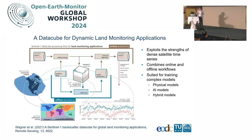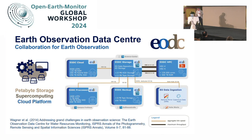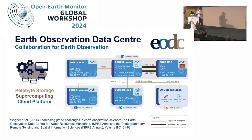We have built a global monitoring system where incoming data are fully automatically processed into a data cube. The data cube is critical for model parameterization — whether physical or machine learning models, you need time series on a pixel basis for calibration. We train our models on the data cube and then apply them in near-real-time. The Earth Observation Data Center is a collaborative effort where many organizations jointly acquire hardware and run supercomputing and storage capabilities — several petabytes of data with CPU and GPU supercomputers — so we can do large-scale global processing comparable to Google Earth Engine.